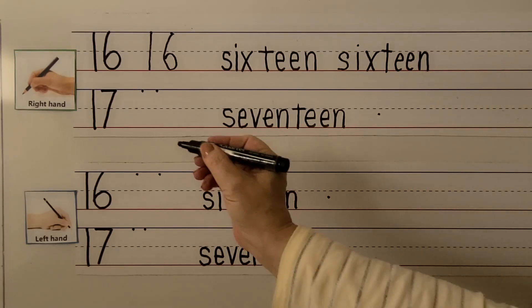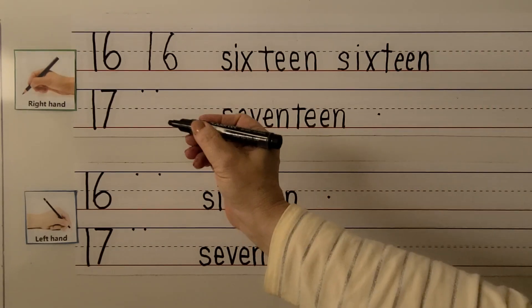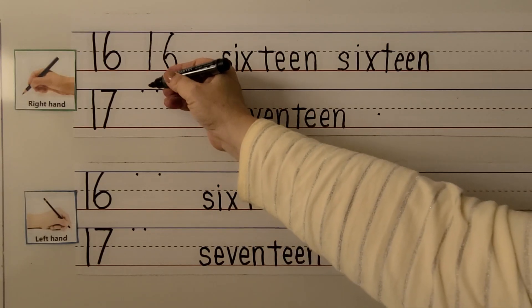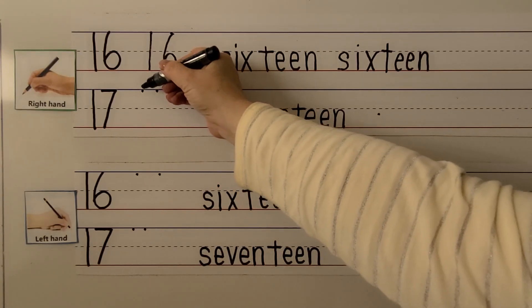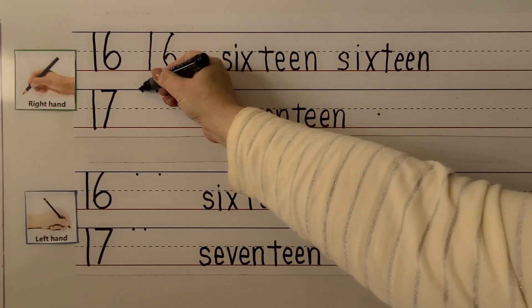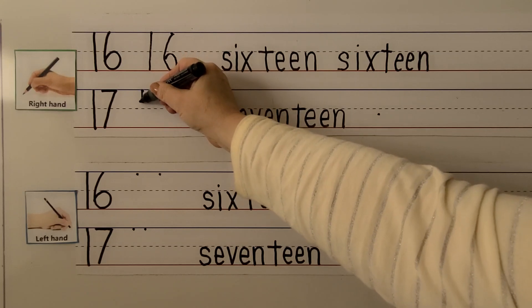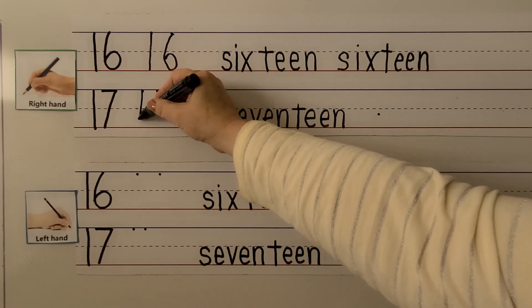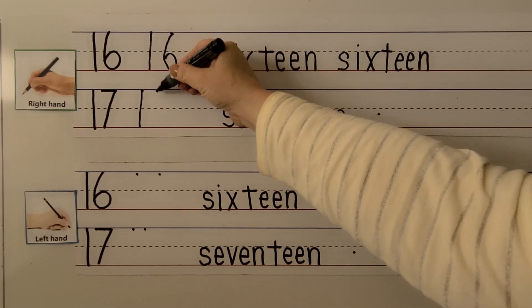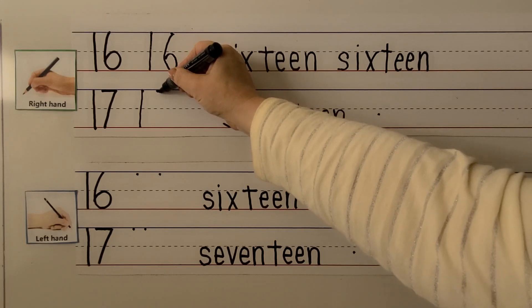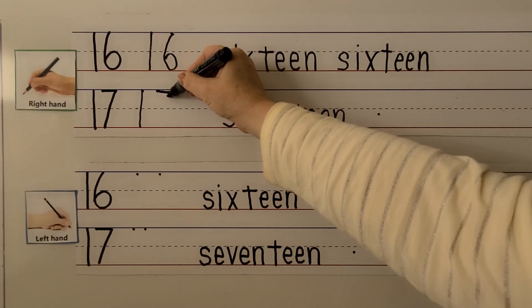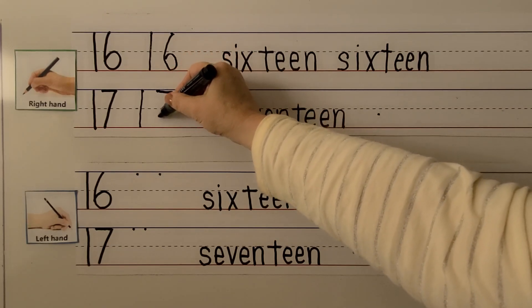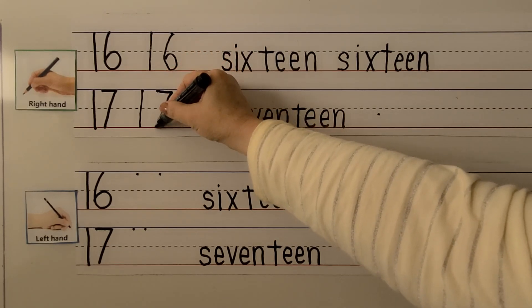We can write the number 17 with our right hand. We start here and make a 1, coming straight down. Then we make a 7 — pull it towards our hand and go down on a slant. 17.